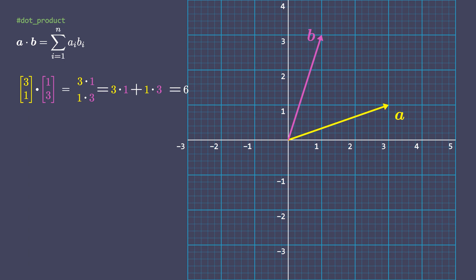Notice that the resultant of the dot product of vectors is a scalar quantity. Thus, the dot product is also known as a scalar product.